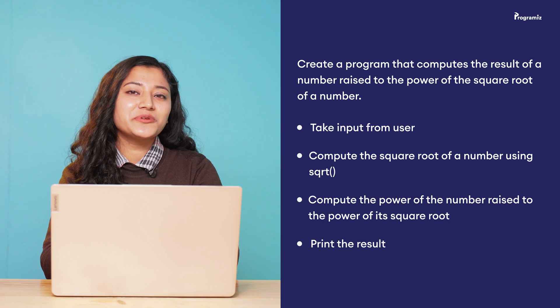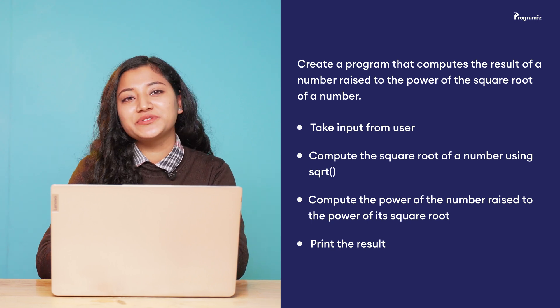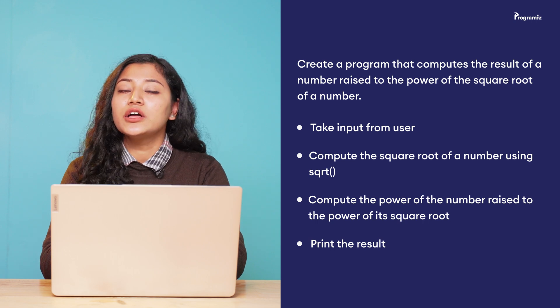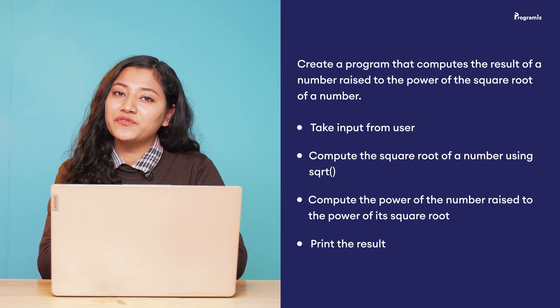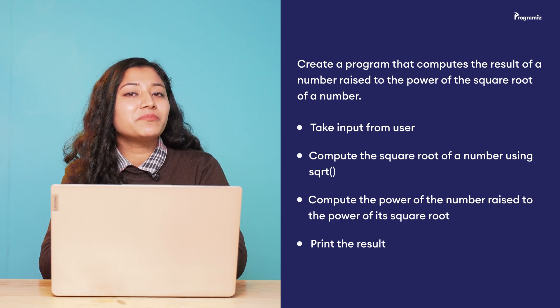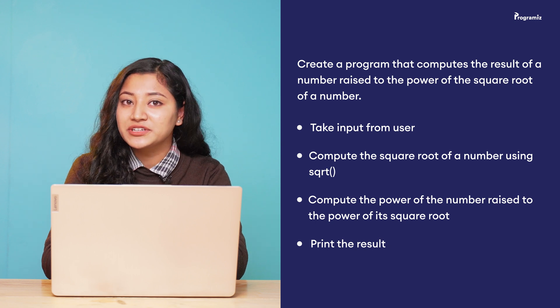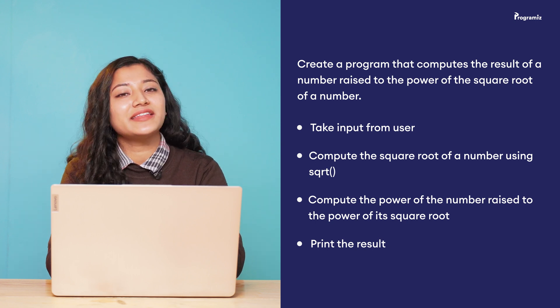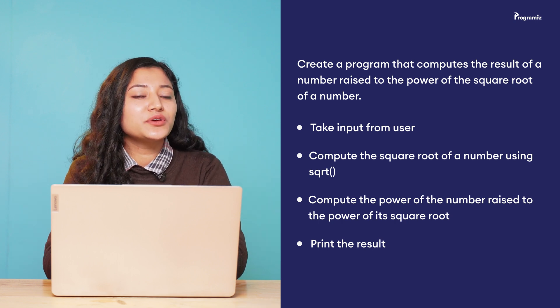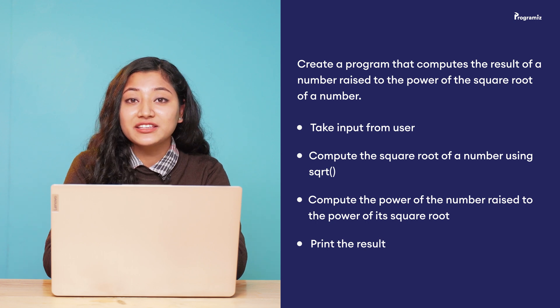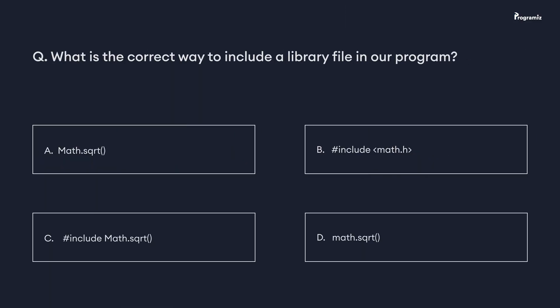To revise what we've learned in this video, here is a programming task: create a program that computes the result of a number raised to the power of the square root of that number. Take input from the user, compute the square root using sqrt, compute the power using pow, then print the result. You can find the answer in our GitHub repository — the link is in the video description. And for the programming quiz: what is the correct way to include a library function in our program? Comment your answer below. See you in the next video — happy programming!